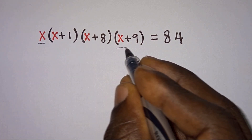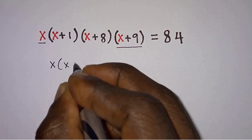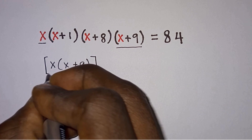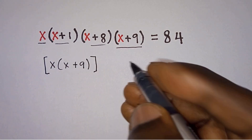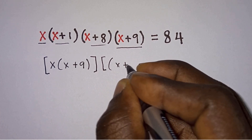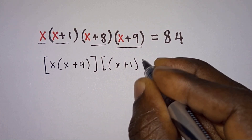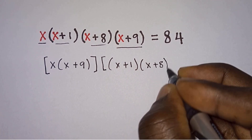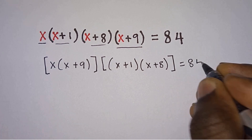So we're going to have x times x plus 9. Then we will multiply this factor by this one as well, so we will have x plus 1 times x plus 8, and this is equal to 84.